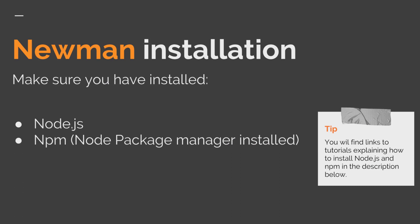In order to install Newman on your own machine, you need two things already installed: Node.js and npm, the Node package manager. Node.js provides the runtime environment where Newman can run, and without them you will not be able to use Newman. I will post links in the description to tutorials explaining how to install Node.js and npm on Windows, macOS, or Linux. If you've already done some work with Node.js or npm in the past, you may already have them installed. I'll start with the assumption that you've managed to install Node.js and npm.